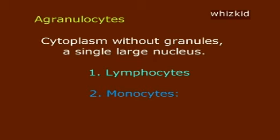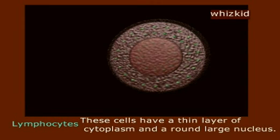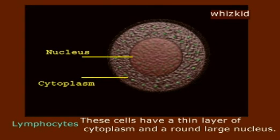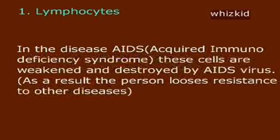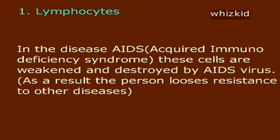Agranulocytes have cytoplasm without granules and a single large nucleus. The types are lymphocytes and monocytes. Lymphocytes have a thin layer of cytoplasm and a round large nucleus. These cells protect the body against viral and fungal infections.